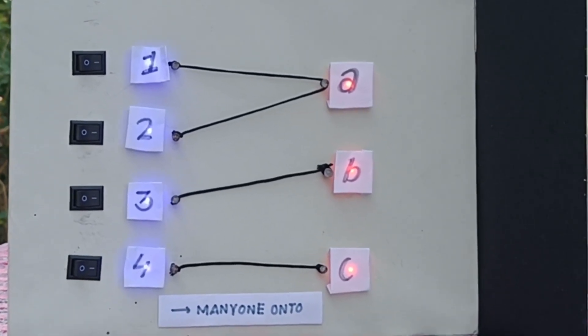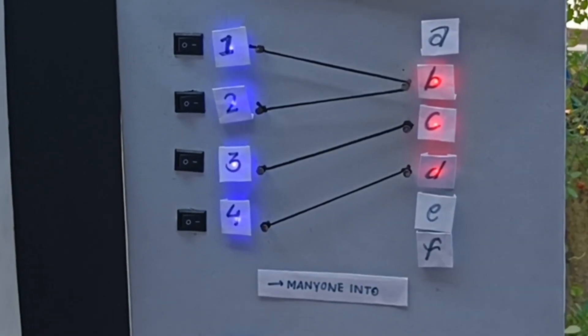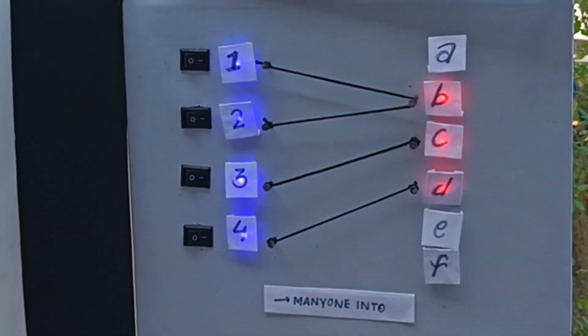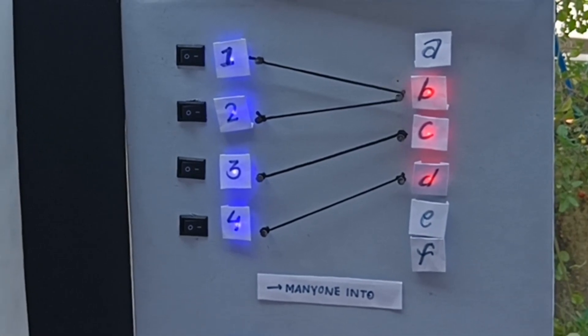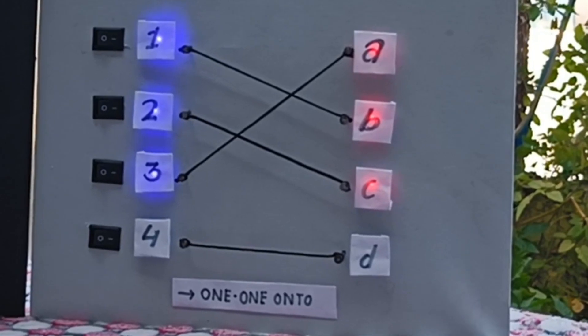Further type is many-one into. This is many-one because elements 1 and 2 in set A is mapped to element b in set B, and into because e and f does not have its pre-image in set A. So the last type is...